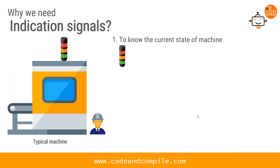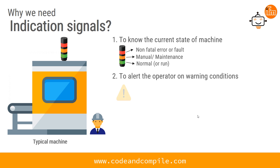The first reason is to know the current state of machines. A machine could be in different states: a non-filtered error or fault, generally indicated by a red light; a manual or maintenance state, indicated by an orange light; or a normal run state. These are the states the user needs to know to make decisions.